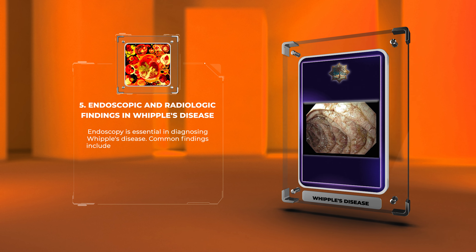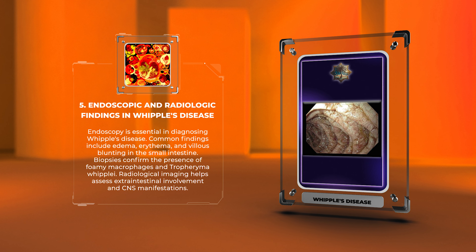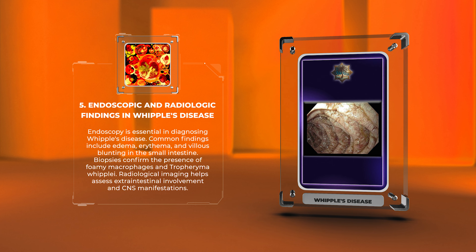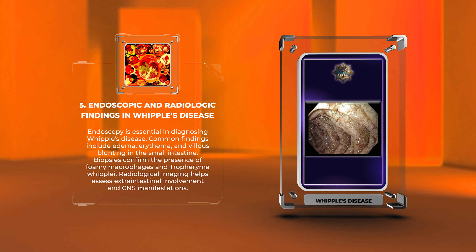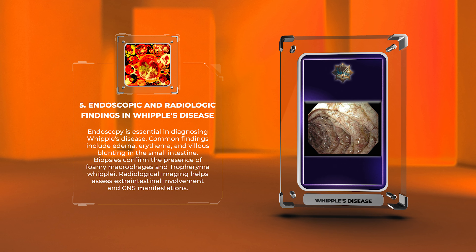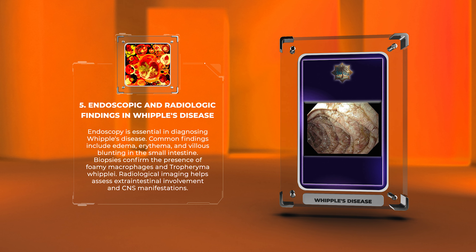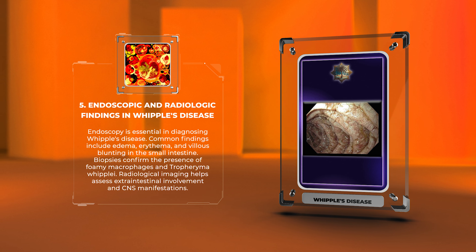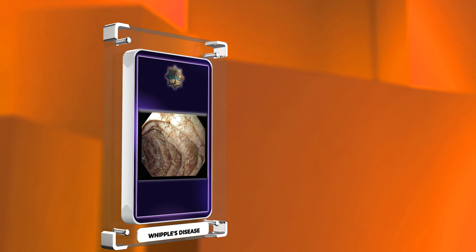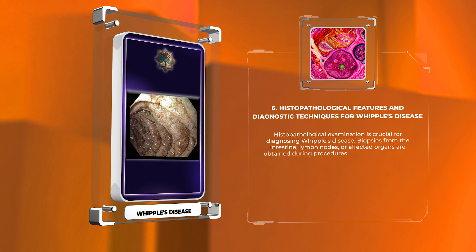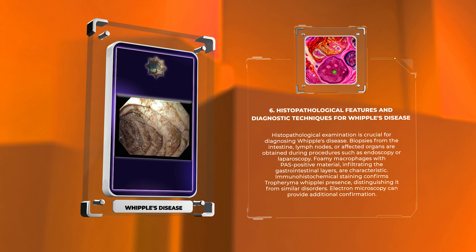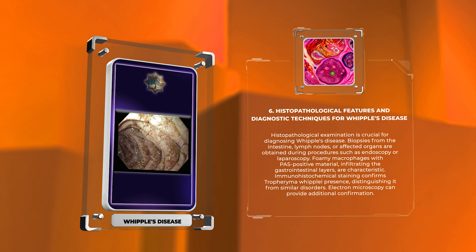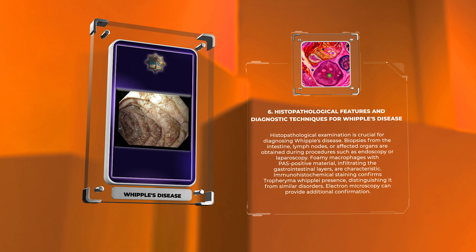Endoscopy is essential in diagnosing Whipple's disease. Common findings include edema, erythema, and villus blunting in the small intestine. Biopsies confirm the presence of foamy macrophages and Tropheryma whipplei. Radiological imaging helps assess extraintestinal involvement and CNS manifestations. Histopathological examination is crucial for diagnosing Whipple's disease. Biopsies from the intestine, lymph nodes, or affected organs are obtained during procedures such as endoscopy or laparoscopy.